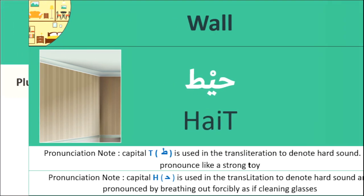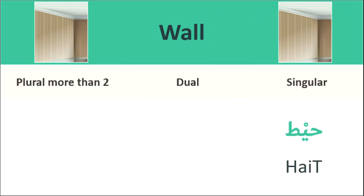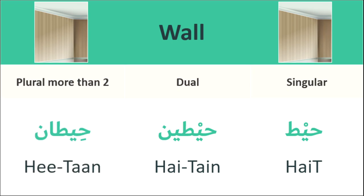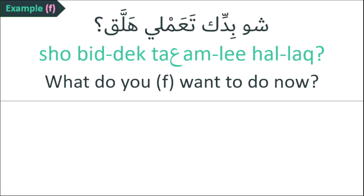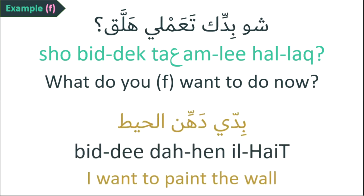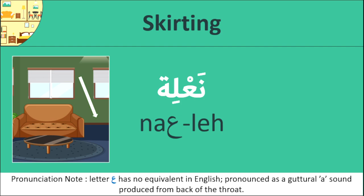The next one is wall. 'Height' (حيط). Singular form: 'height'. Dual form: 'heightine'. Plural form: 'heitan'. Example, talking to a woman: 'What do you want to do now?' The reply refers to the wall — 'height'.